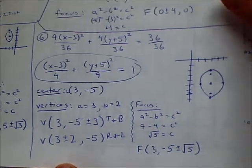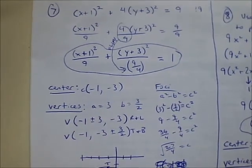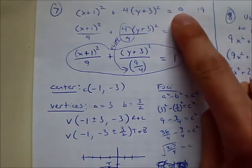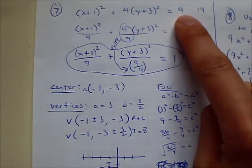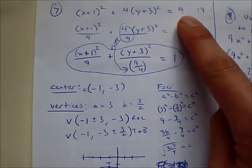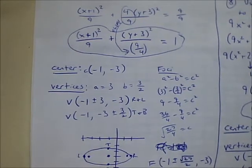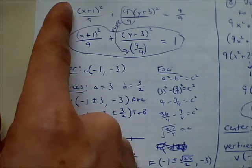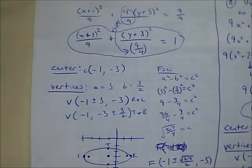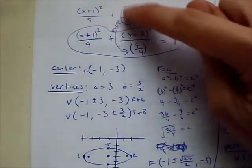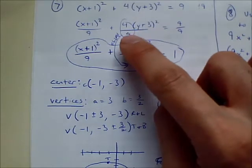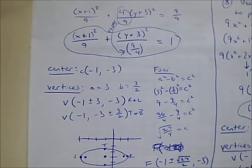Let's look at number 7. For number 7, we start by dividing by 9 because for an ellipse to be in standard form, we need a 1 on the right-hand side. Dividing everything by 9: 9 divided by 9 is 1. For the X's, there's no number in front, so treat it as a 1 — 1 over 9, which doesn't reduce, giving a 9 on the bottom. Here's where we need some fraction work.